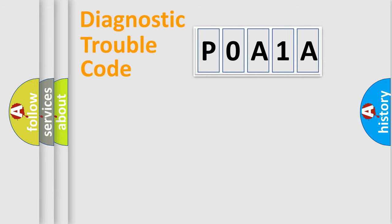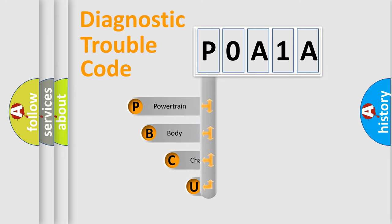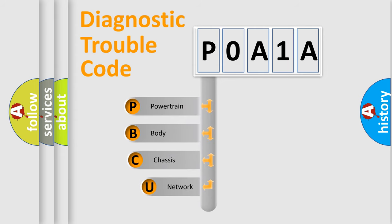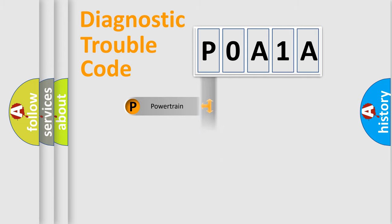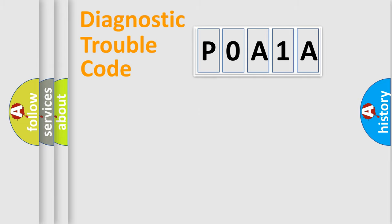First, let's look at the history of diagnostic fault code composition according to the OBD-II protocol, which is unified for all automakers since 2000. We divide the electric system of the automobile into four basic units: Powertrain, Body, Chassis, and Network.